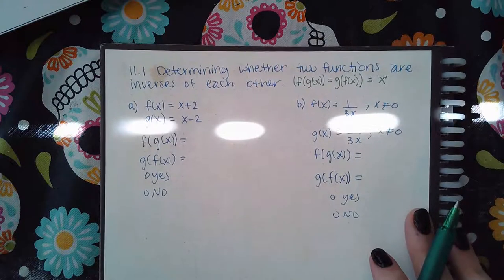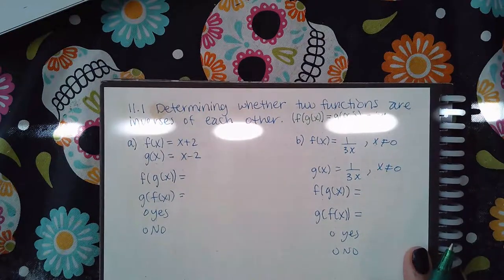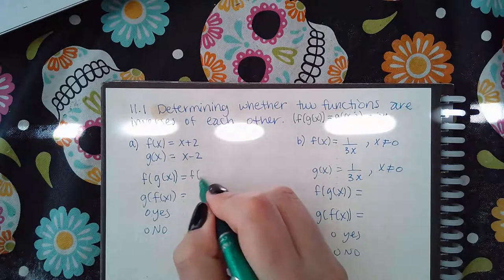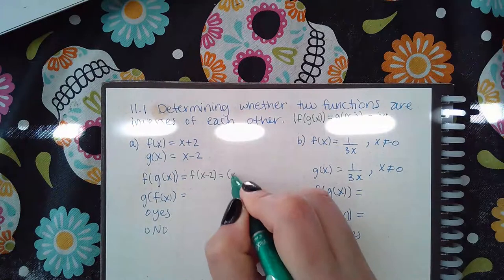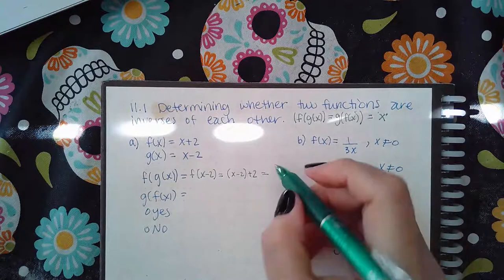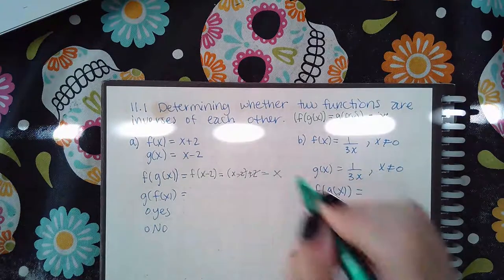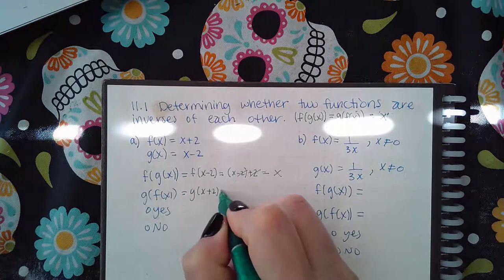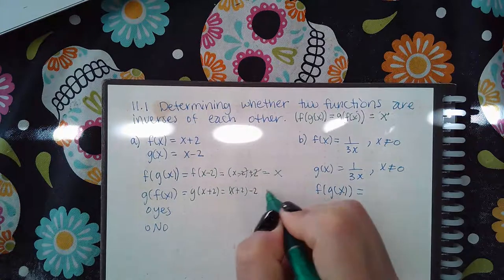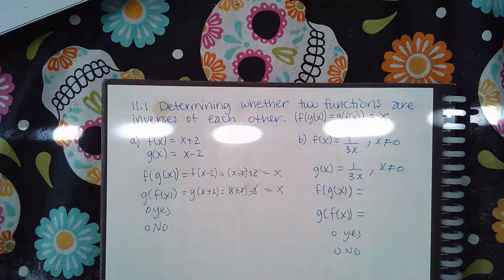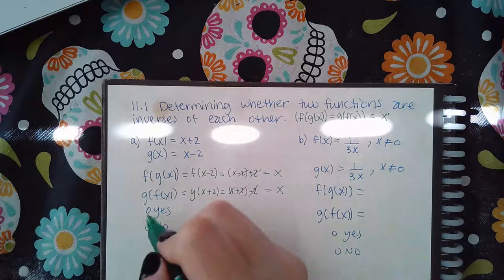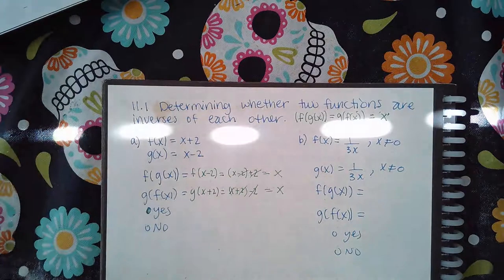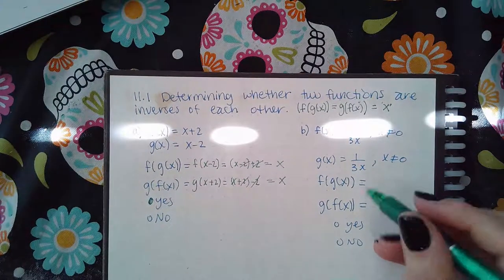So if I work on this one, g(x), that means I'm plugging x minus 2 into f. So x minus 2 plus 2, the negative 2 and positive 2 cancel and I just have x. Doing g(f(x)): x plus 2 minus 2, again the positive 2 and negative 2 cancel so I get x for that one as well. So the answer here is yes because both of them turned out to be x.